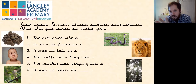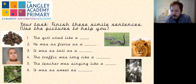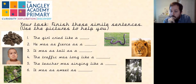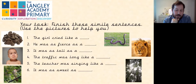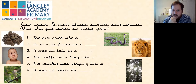Let's go through our pictures — we've got chocolate, a baby, a bird, a snake, a lion, and a tree. The girl cried like a baby. He was as fierce as a lion — it would be very different if we said he was as fierce as chocolate. It was as tall as a tree.